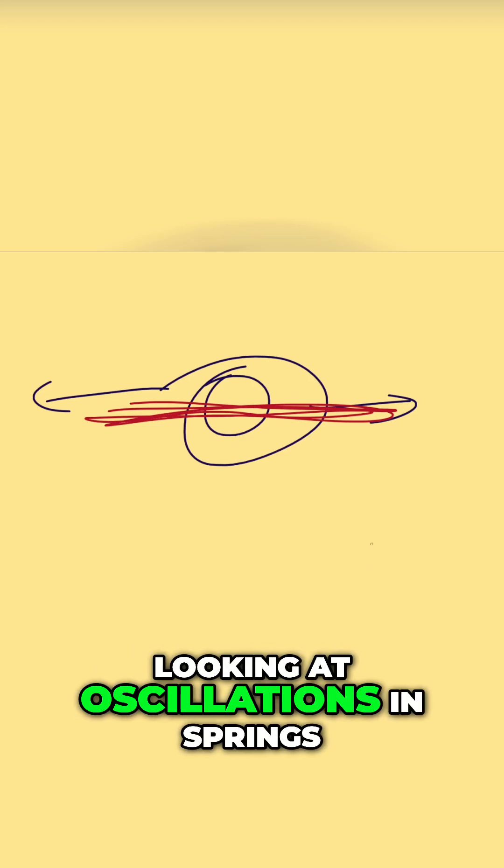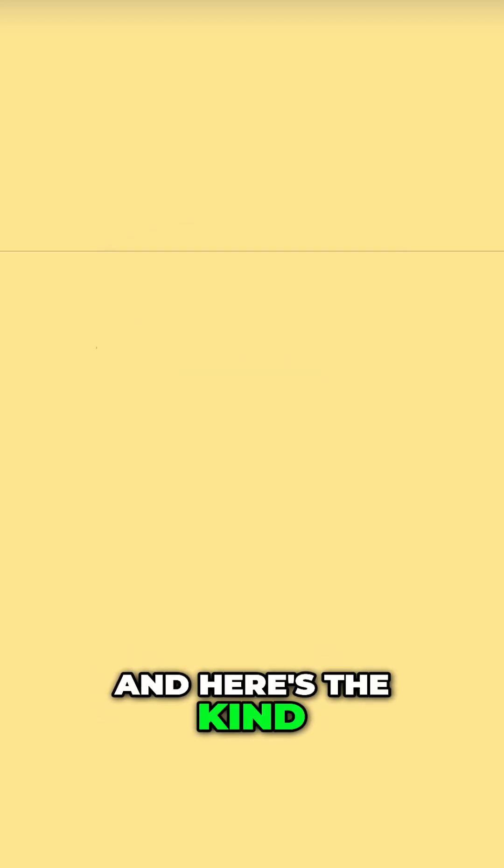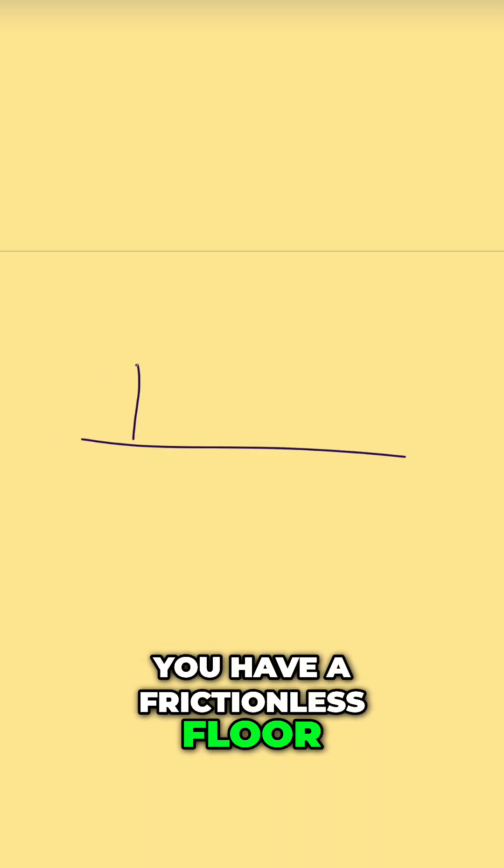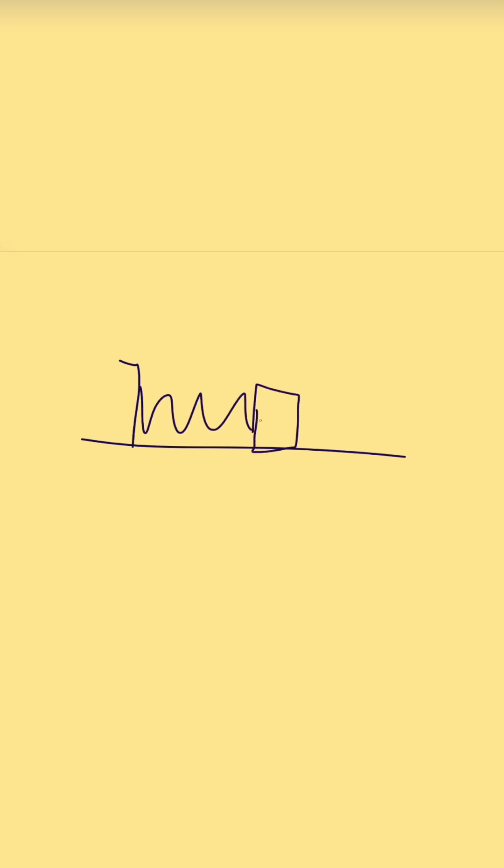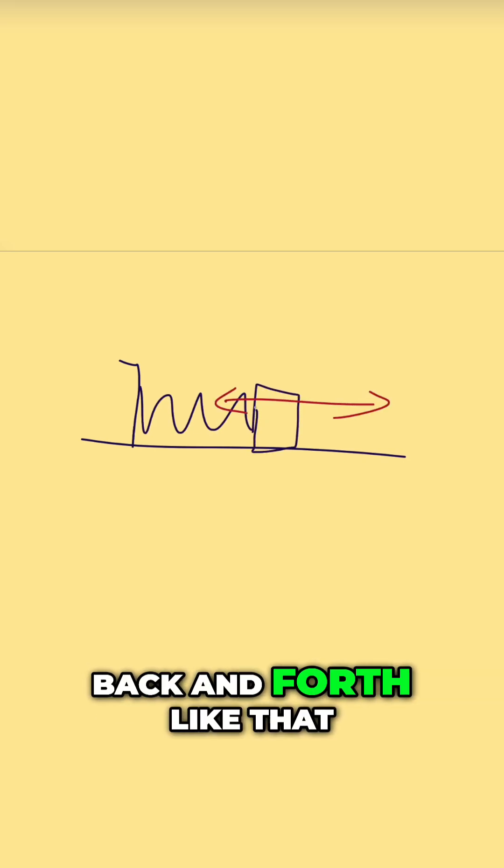In this video we're going to be looking at oscillations in springs. We have a frictionless floor, we have a spring attached to the wall, and there's a mass on the end of it that can move back and forth.